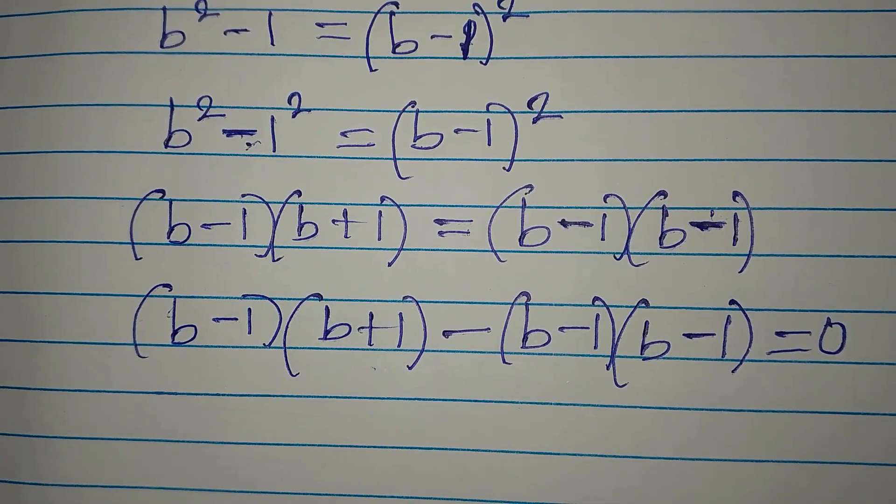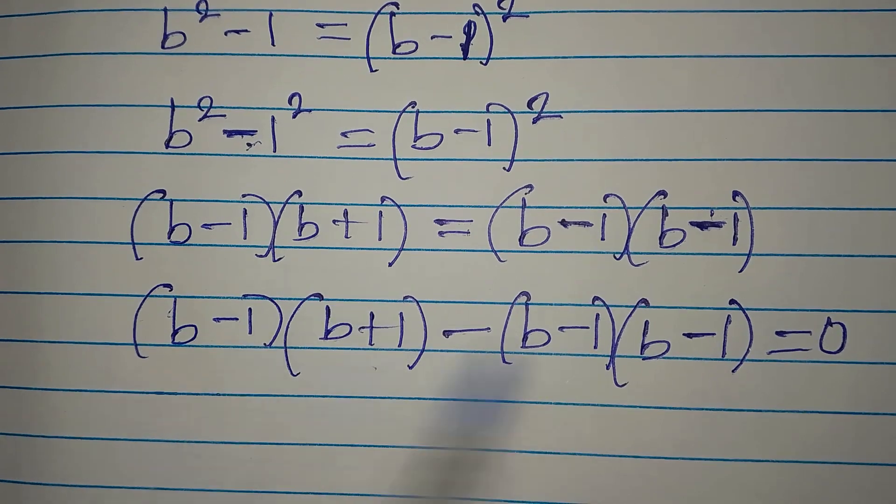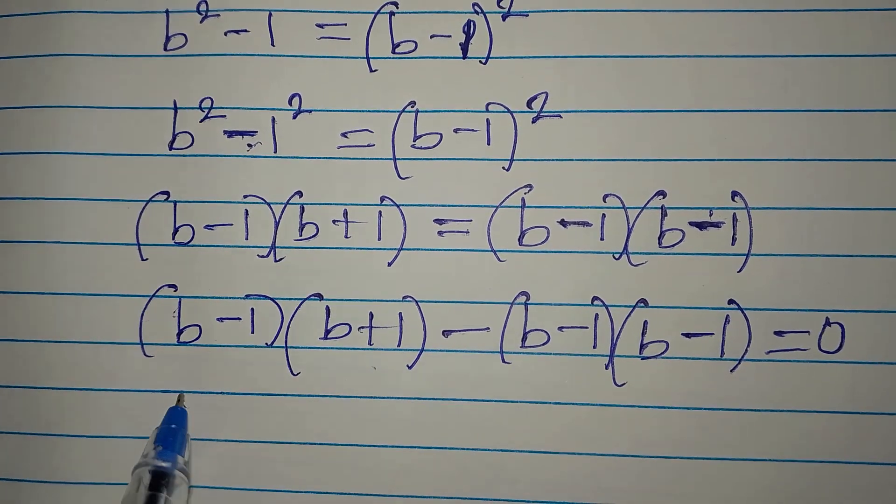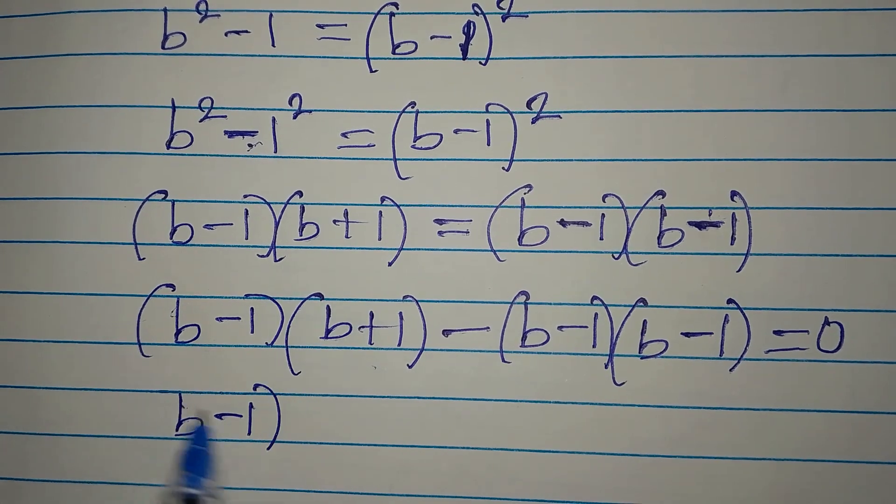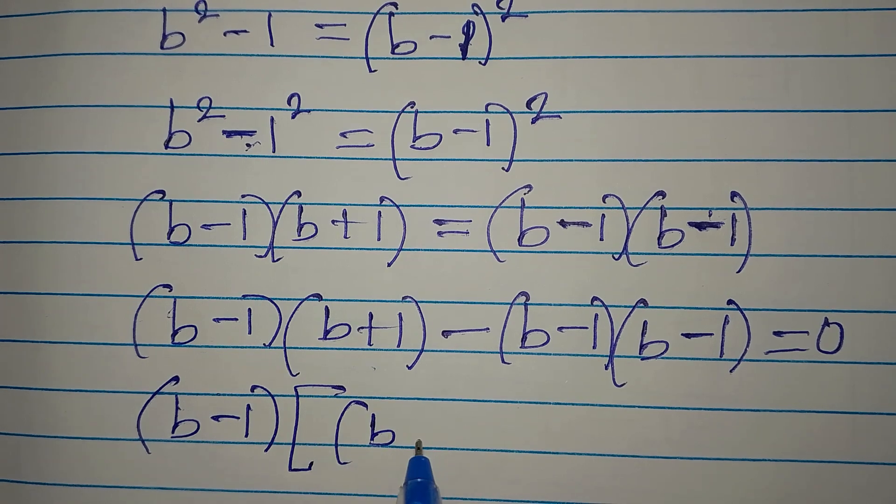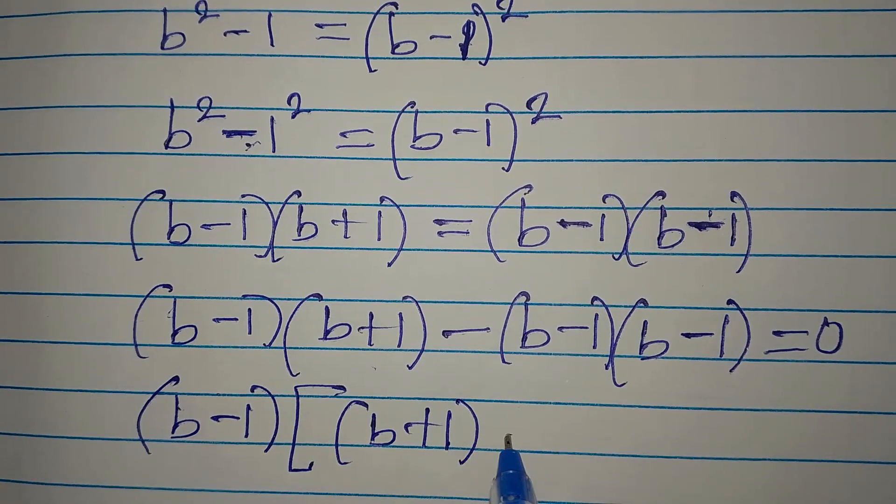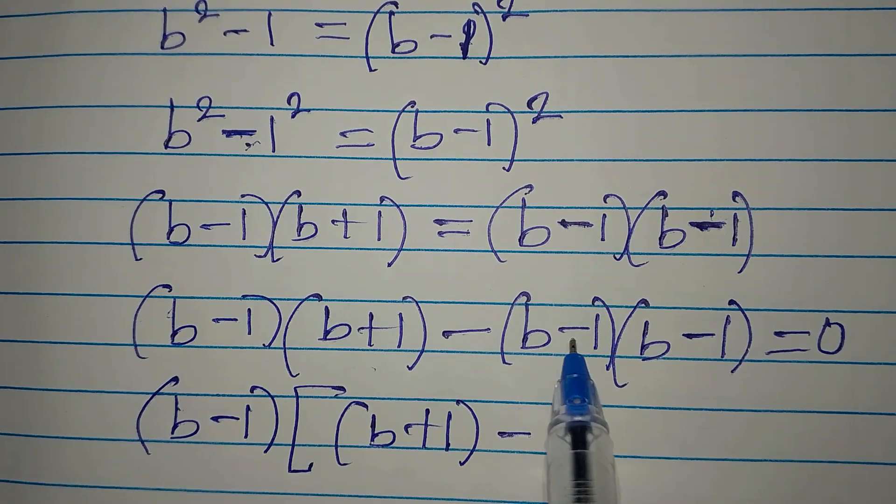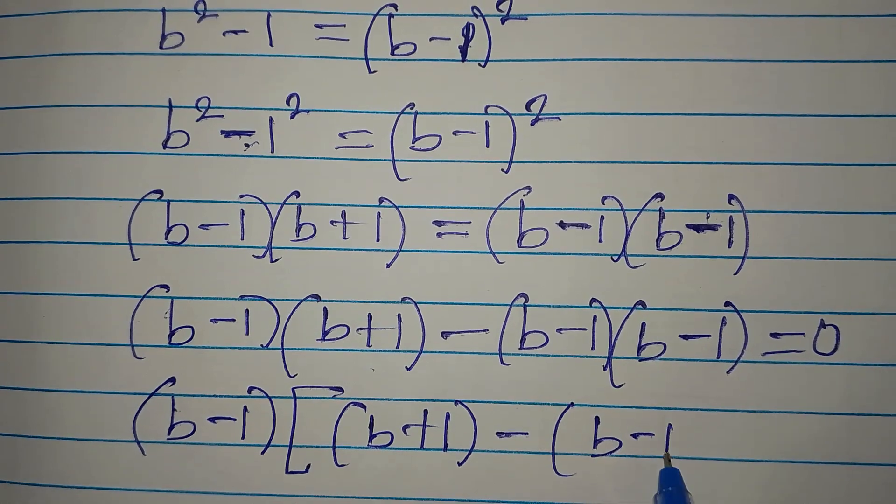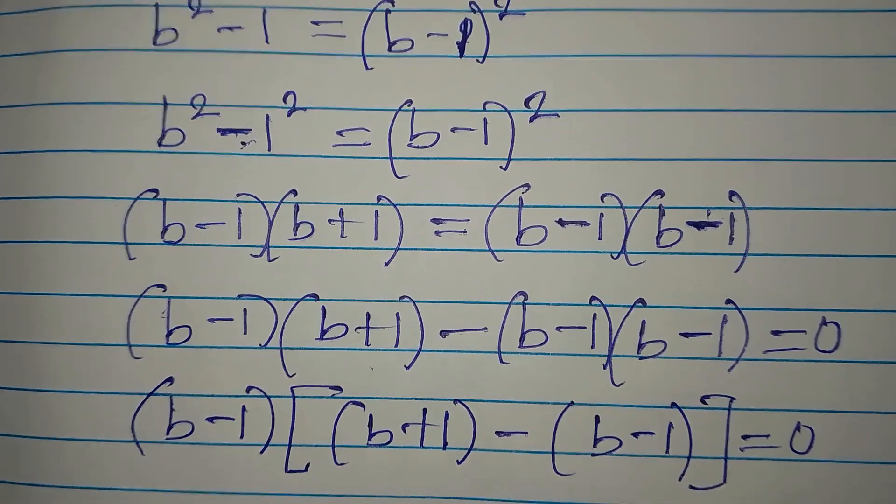So what should I do? This term, this is one term, and this is another term, but they have b minus 1 in common. So I'm going to pick out b minus 1 as I factorize. Then here I have open bracket b plus 1, then minus b minus 1 is already out. So there will be another one. Open bracket again and write your b minus 1. Then you close this and equate all of this to 0.